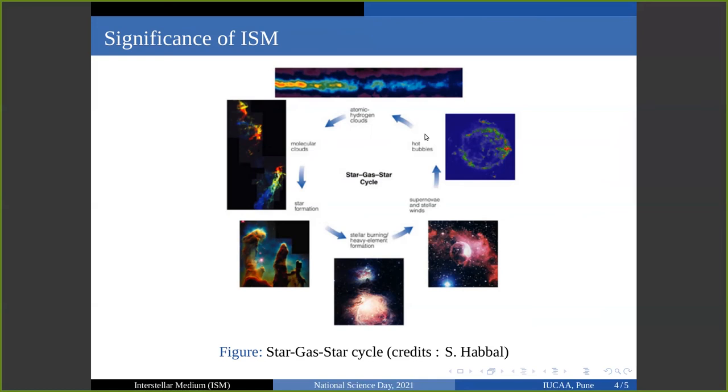This cycle continues, and with each cycle more heavy elements are made by nuclear fusion in stars, thereby enriching the galaxies. This cycle also provides a negative feedback to star formation, which plays a crucial role in the evolution of galaxies. This is how the ISM regulates galaxy evolution.